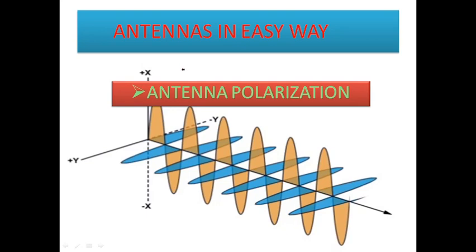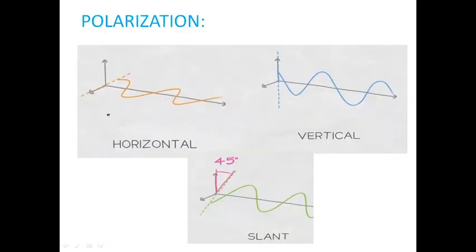In today's class, we are going to discuss one of the important antenna parameters: antenna polarization. We will see the importance of antenna polarization. First, we will see what polarization is and its definition. Simply, it is nothing but the orientation of the electric field component in a particular direction. In a simple textual definition, polarization is defined by the orientation of the electric vector component.